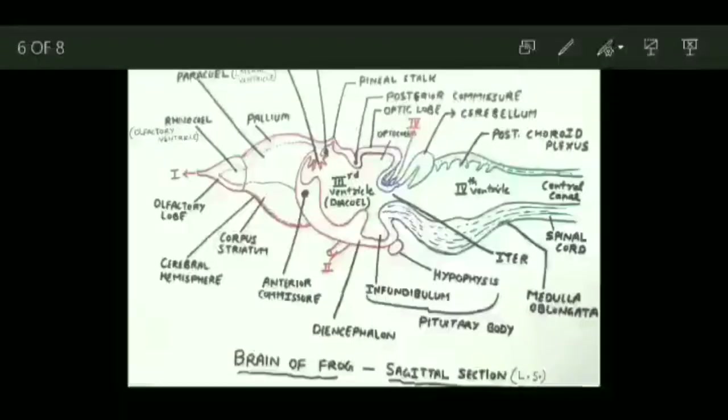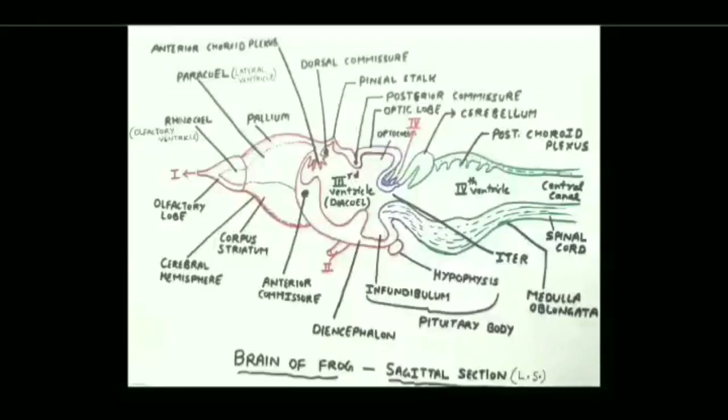One more feature of the frog's midbrain: it contains bands of nerve fibers called the crura cerebri — thick bands of nerve fibers running below the optic lobes. The crura cerebri (singular: crus cerebri) connect the diencephalon with the medulla oblongata.